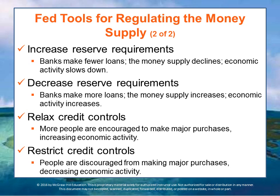The Fed can also increase reserve requirements, meaning banks have to hold more money in their vaults to cover their loans, which means less money is in the economy. They could decrease the reserve requirements, which means more money goes into the economy because banks have to keep less. They can relax credit controls, meaning people are encouraged to make major purchases because it's easier to get credit, and therefore money flow increases in the economy.